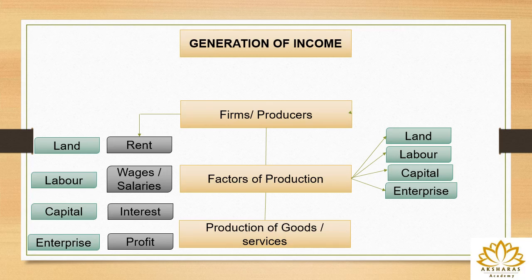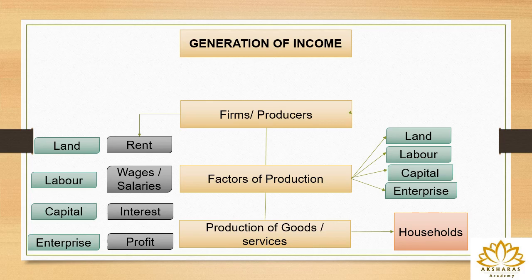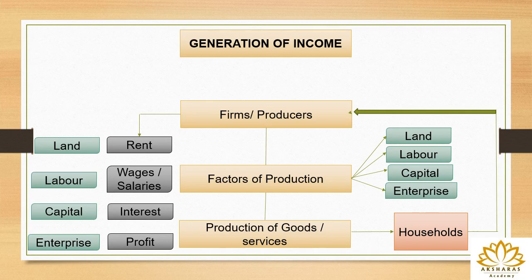We as households supply factors of production — we go to work as laborers or provide land. The firms have now produced the goods and services, and the households are going to purchase them. We receive income from the firms and when income comes to us we spend it again on the goods and services produced by the firms. Again the money flows back to the firms, who produce more goods using factors of production and pay the households again. This is the circular flow of money — this is how income is generated in an economy.